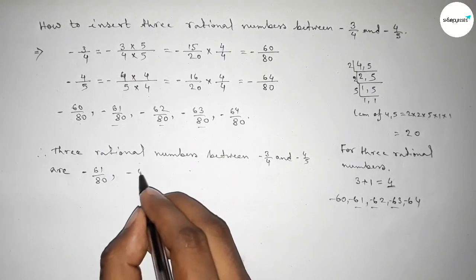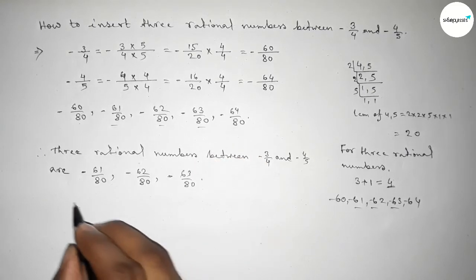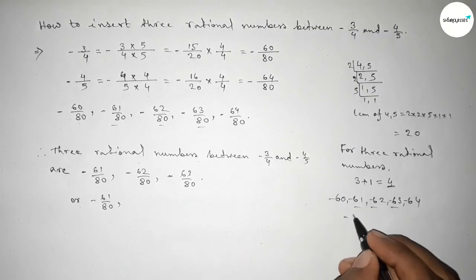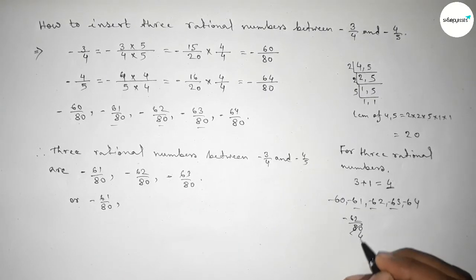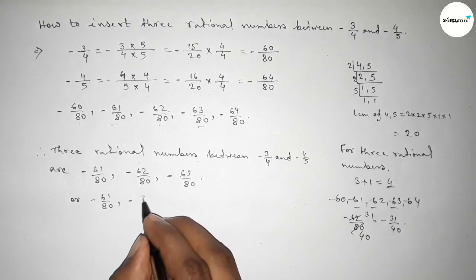So here, the three rational numbers are -61/80, -62/80, and -63/80. Or we can write this -62/80, if we divide by 2 both, minus 31/40, and this one minus 63/80.